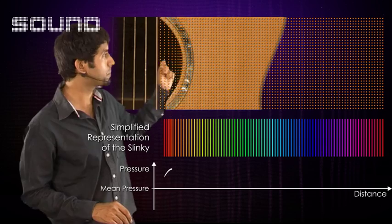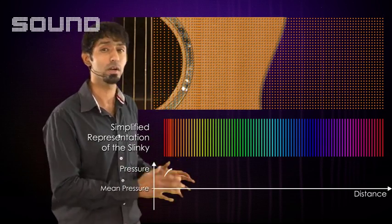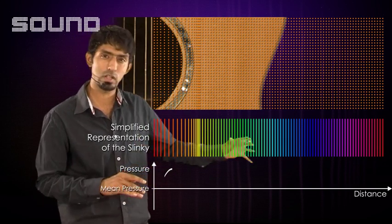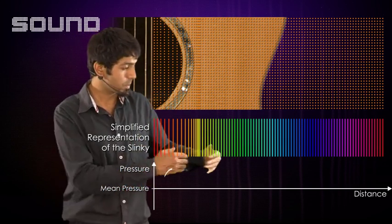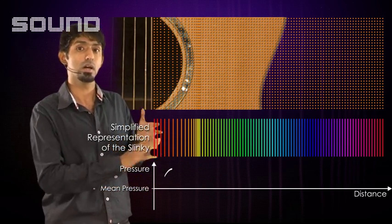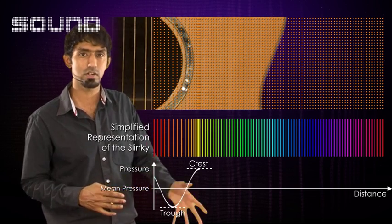The string gets pulled back—in other words, there's a pressure drop, and the slinky gets pulled back again. The compression has moved forward, but the back is more elongated. In the graph, this is represented as a down, so a trough. A crest and a trough.